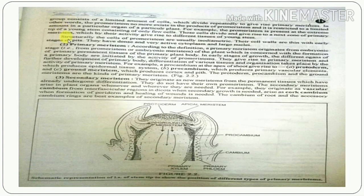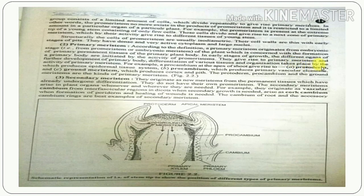The second category is primary meristem. Pro-meristem gives rise to primary meristem, and primary meristem is responsible for further development of the primary body and differentiation of various tissues. It gives rise to three structures: protoderm, pro-cambium, and ground meristem. Protoderm produces the epidermal tissue system, pro-cambium produces primary vascular elements, and ground meristem produces cortex and pith.